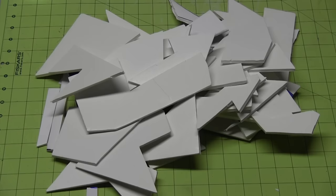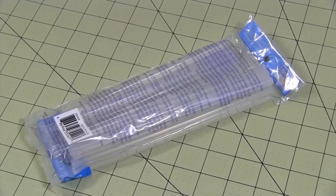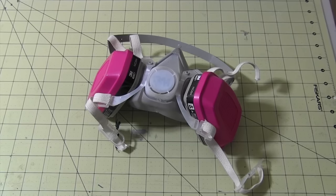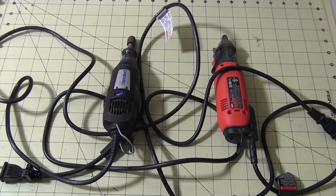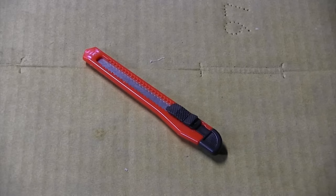For this build, you'll need foam core, silver rub and buff, sandpaper, hot glue, paint, a respirator mask, goggles, a dorm room trash can, a rotary tool, scissors, razor pens, or a box cutter.